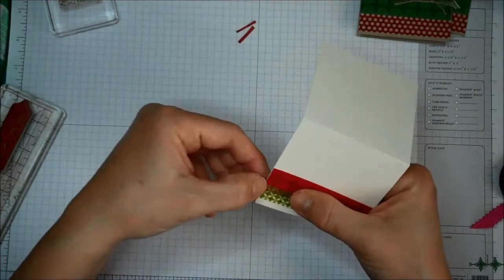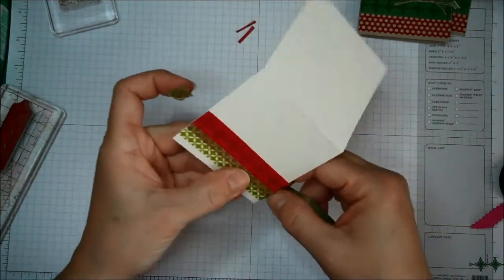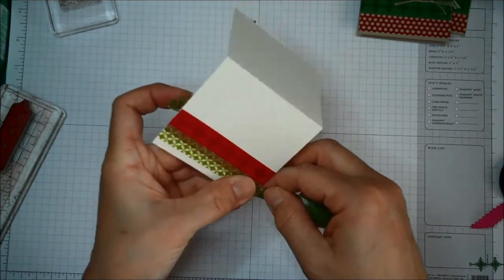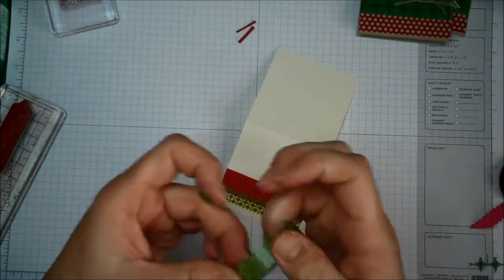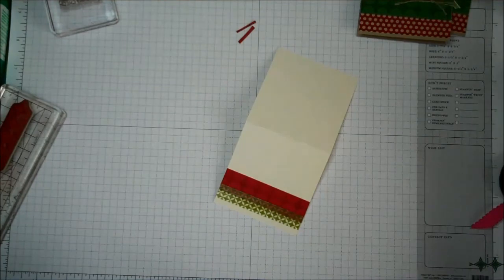It peels off. If you don't get it exactly where you want it the first time, I'm going to overlap them. And then I just tear the ends. I don't even bother with scissors. The point of Washi Tape is that it doesn't have to be perfect, so why make it more work than it is?